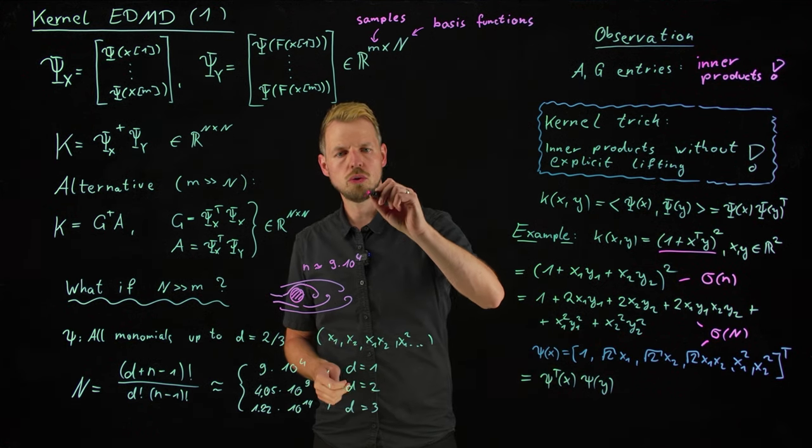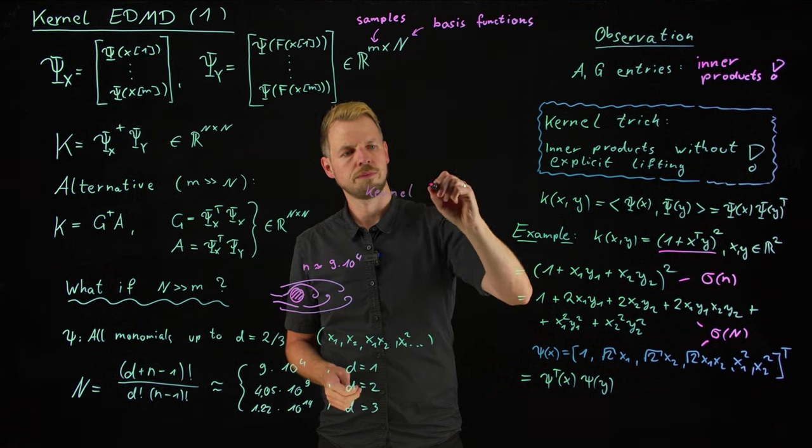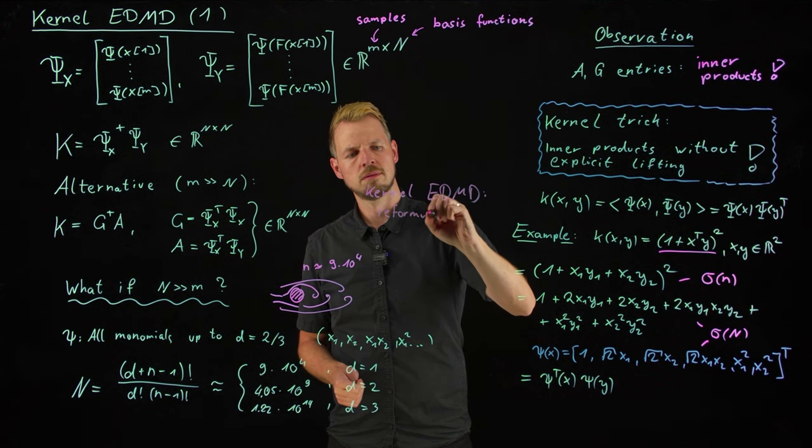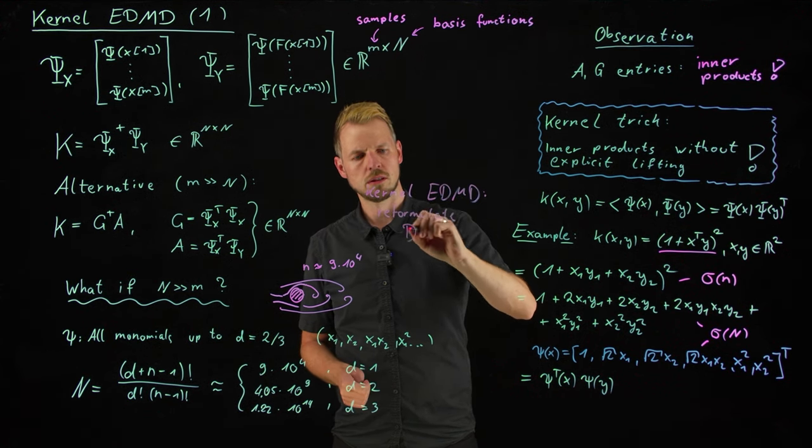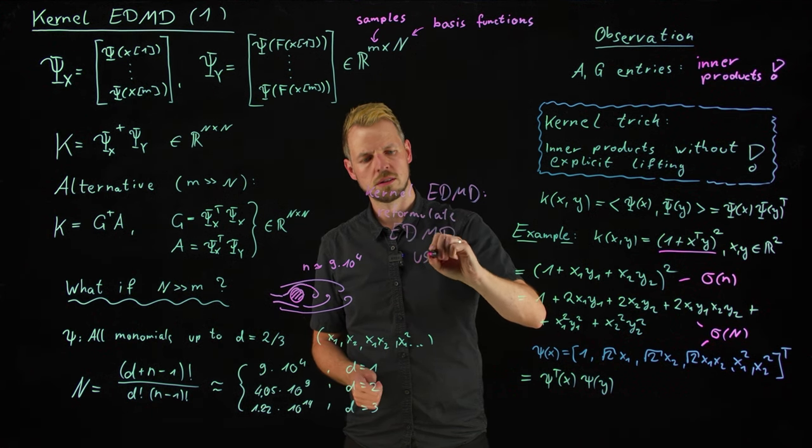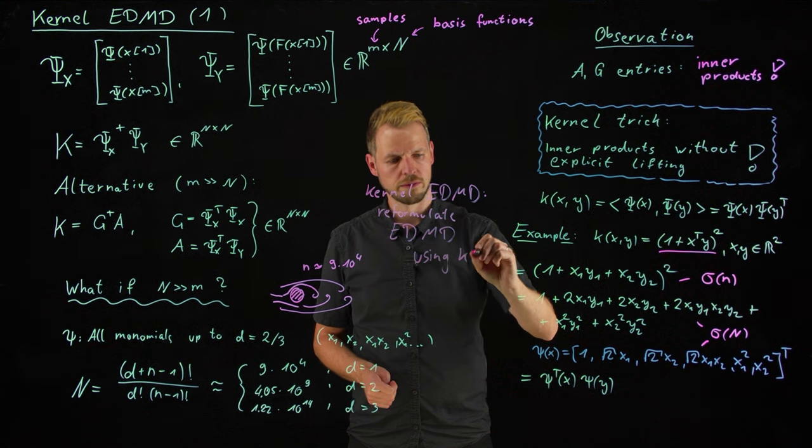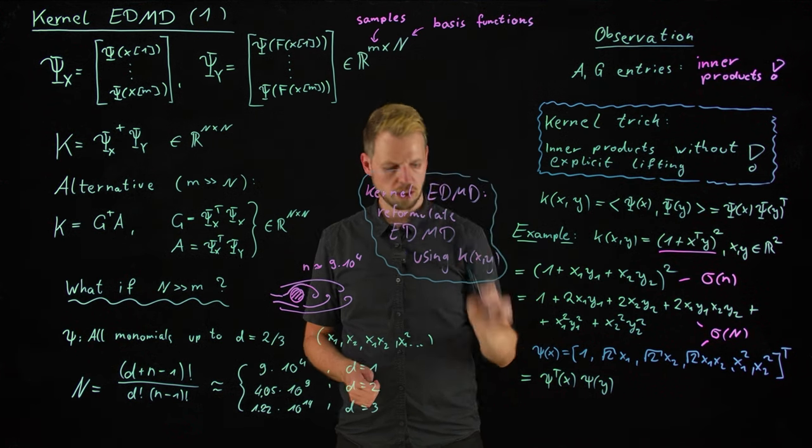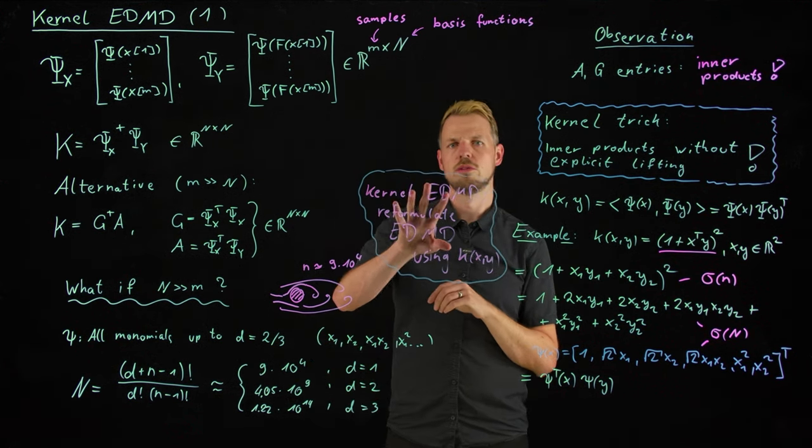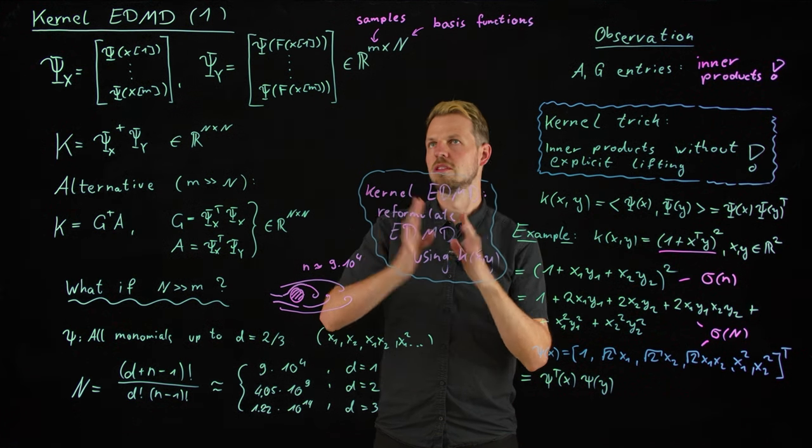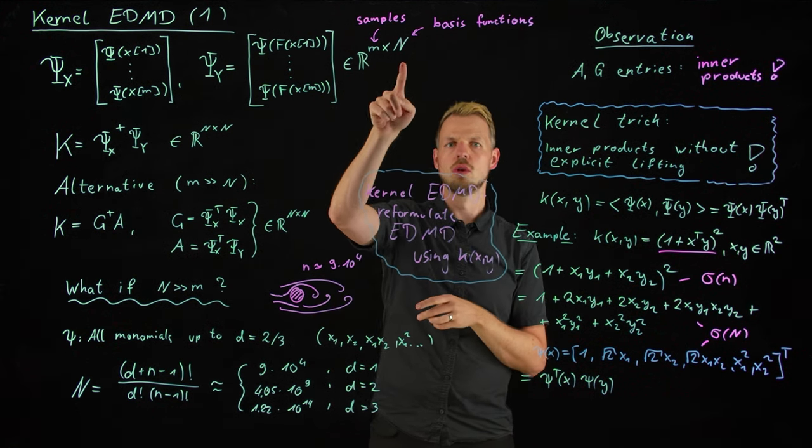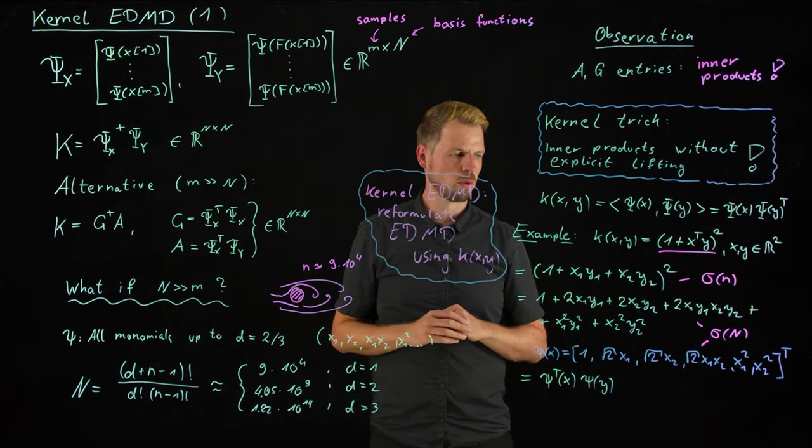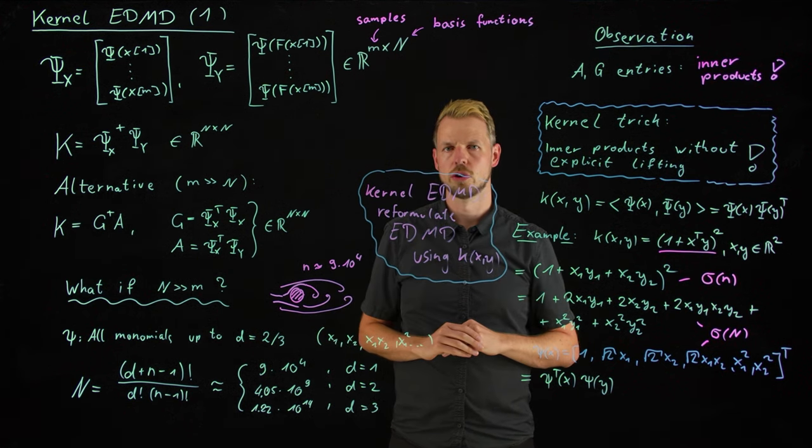And so what we are going to do in kernel EDMD is just reformulate DMD or EDMD using some kernel function k. So this is the mission. And this is what the next two videos are going to be all about. And we will see that after a reformulation like this, everything will scale in terms of the number of samples and no longer in terms of the feature space dimension. So thanks a lot for your attention. And stay tuned for the next two videos where we are going to look much more deeply into kernel EDMD. Thanks a lot.